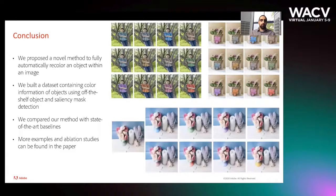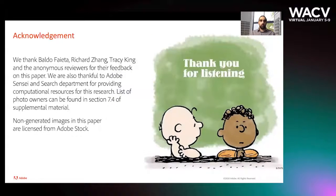In conclusion, we proposed a novel method to fully automatically recolor an object within an image, and we built a dataset using off-the-shelf object detection and salient mass detection. We compared our method with state-of-the-art baselines. More examples and ablation studies can be found in our paper, as well as more details about the network architectures we used. Thank you to everybody who helped us in this research, and thank you for listening.